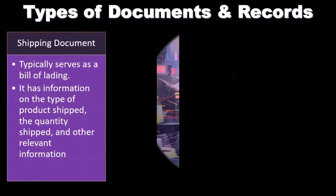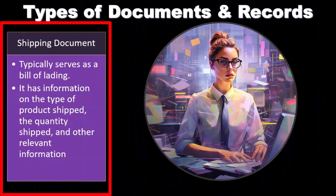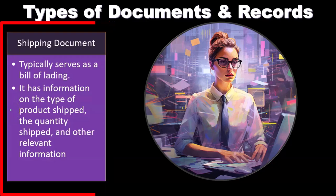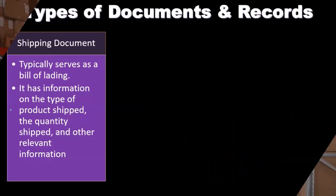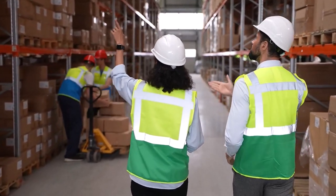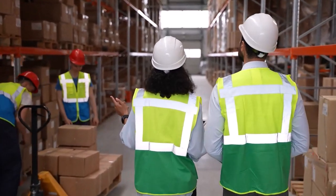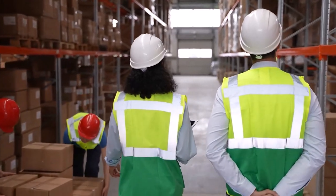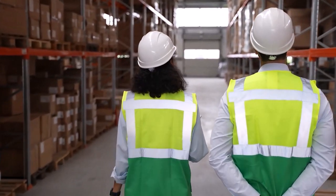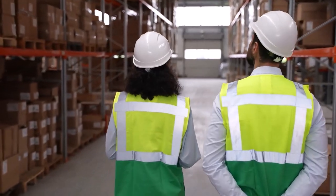We also have the shipping document, which typically serves as a bill of lading. It has information on the type of product shipped, the quantity shipped, and other relevant information. We want to check those shipping documents because, when talking about goods being shipped out, they are often the point at which we recognize revenue. Revenue for goods that are sold typically happens when the goods are delivered. How do we test when the goods are delivered? If goods are shipped from a warehouse, we would need to look at the shipping documents.